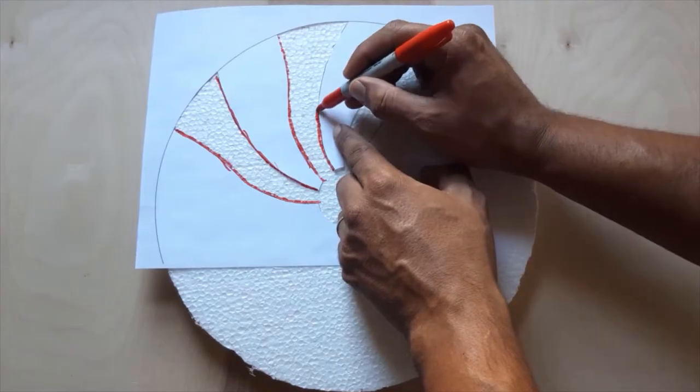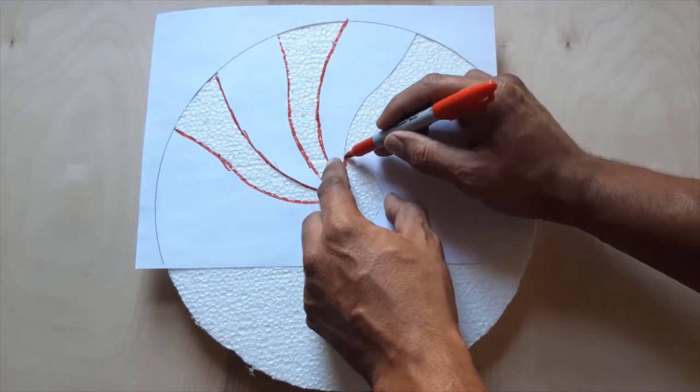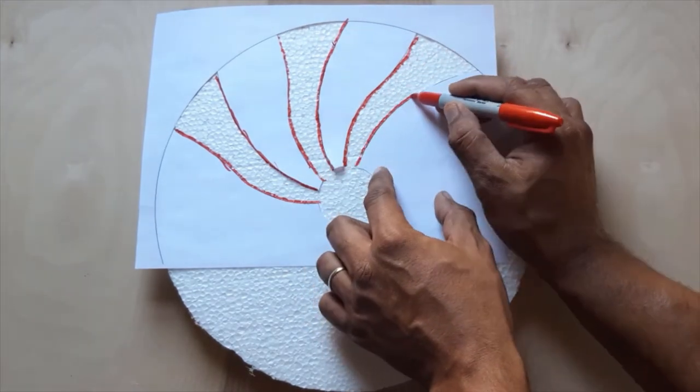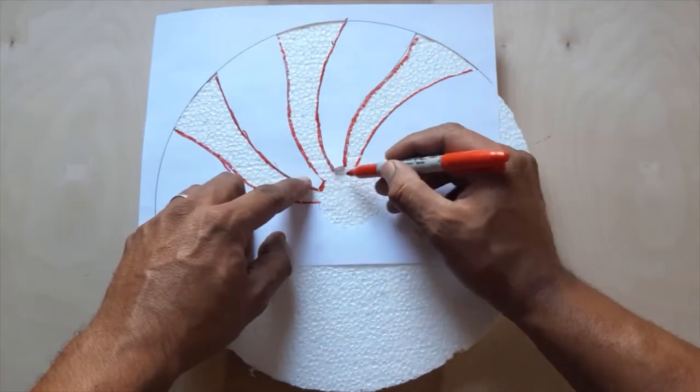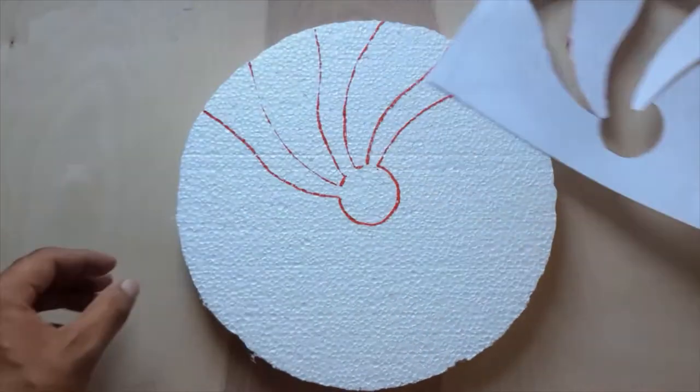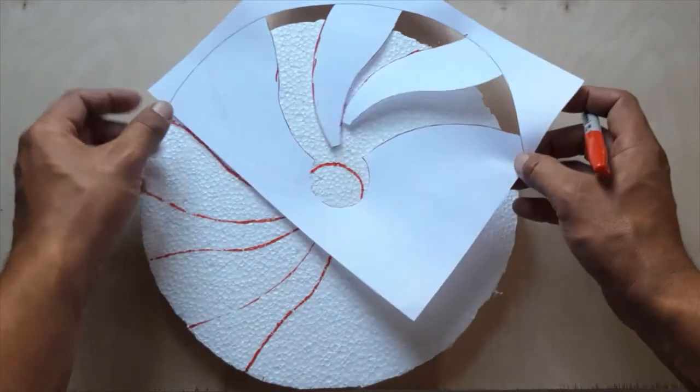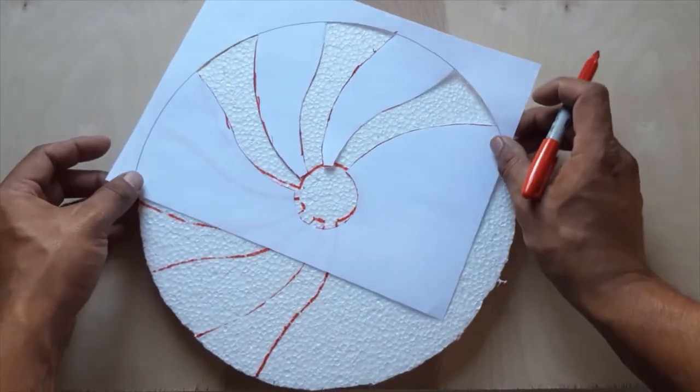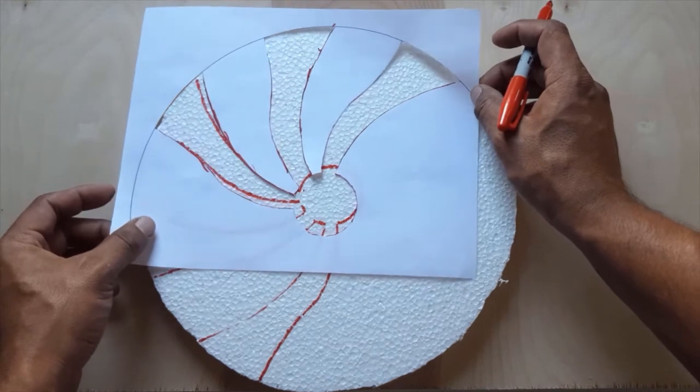Place the edges of the template with the edges of the foam and trace the inside area with the desired color marker. After tracing the first pattern section, place the template's first pattern and align it with the last pattern from the foam circle.